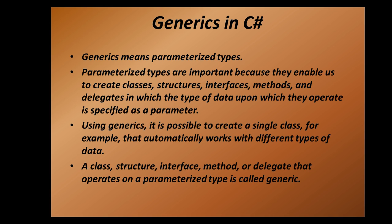Generics means parameterized type. Parameterized types are important because they enable us to create classes, methods, etc., in which the type of data upon which they operate is specified as a parameter. So what does generic do? If you are working with a method or a class, you can specify a specific data type in which that class or method can work — it won't work with any other data type.